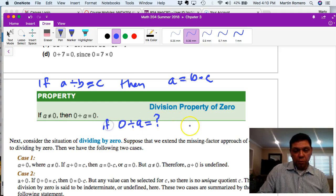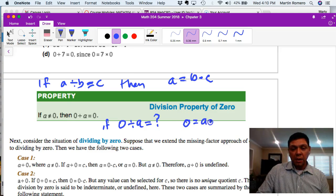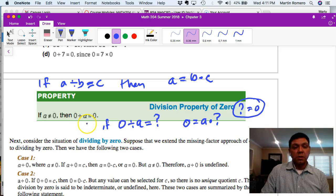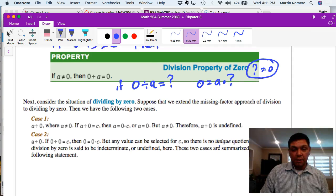Well if this is true then what else has to be true is that zero is equal to a times the question mark. And so in order for a times the question mark to be equal to zero, the question mark has to be equal to zero. So therefore we have this conclusion: zero divided by a is equal to zero. That's a straightforward approach why zero divided by any number is zero.